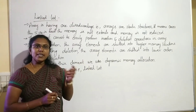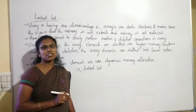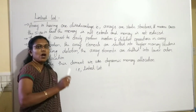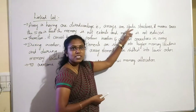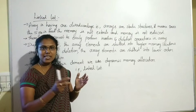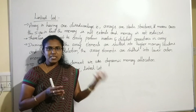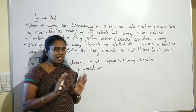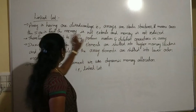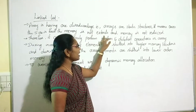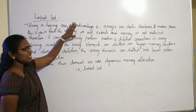Queue and stack concepts can be implemented using array data structure. Array is the linear data structure. But that array is having one disadvantage. Arrays are a static structure — static means fixed. Once the size is fixed at the implementation of the program, we cannot increase or decrease the size of the array. That nature we call as static nature.